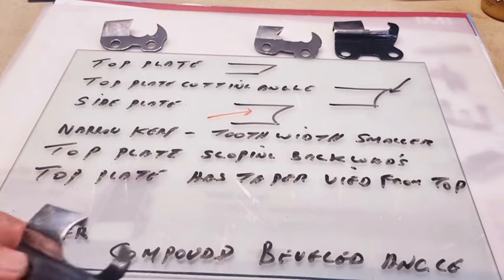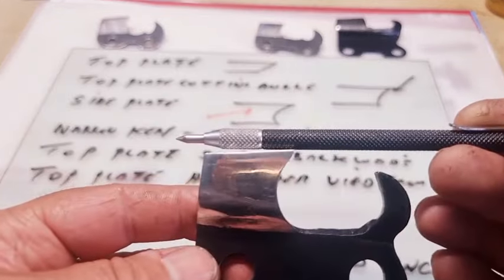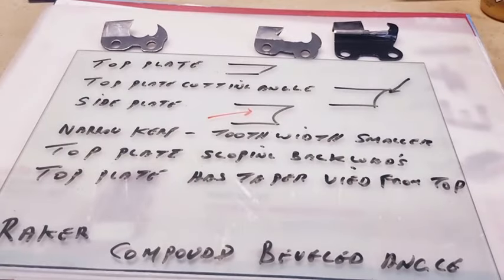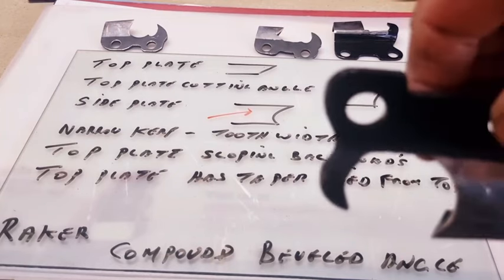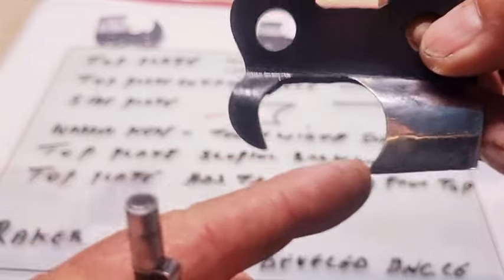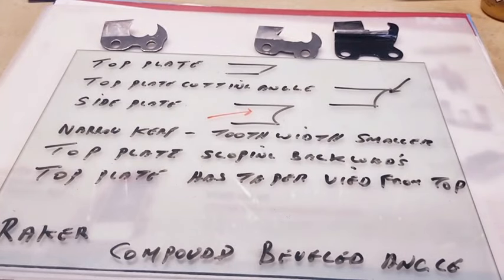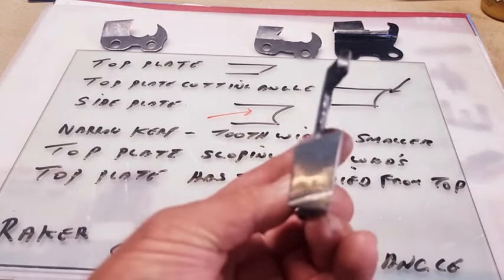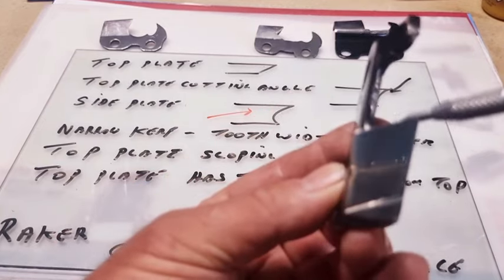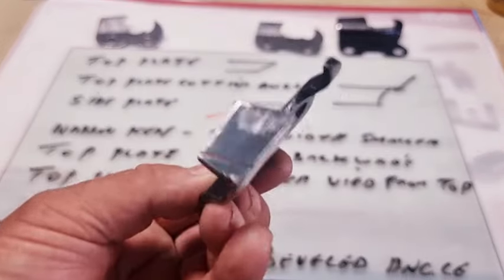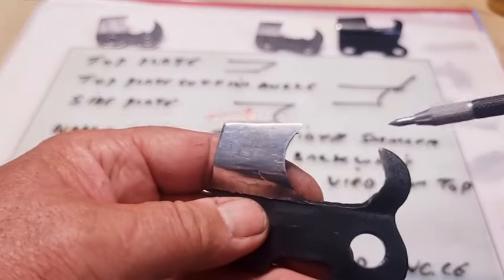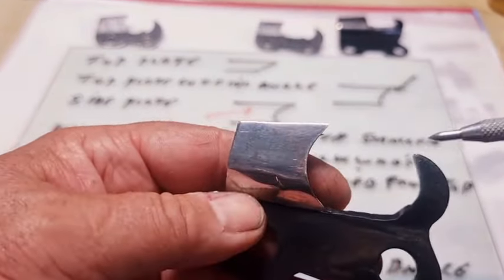The top plate slopes backwards for two reasons: to give clearance so the tooth isn't rubbing and doesn't create friction, and also because when a tooth goes through cutting a log it has a rocking motion up and down. As it strikes the timber, the raker comes down and takes a partial chip; the next tooth comes behind and does the same, which generally removes the chip. Also, the top plate has a taper viewed from the top — it's wider at the front and narrower at the back, which gives it another clearance angle.